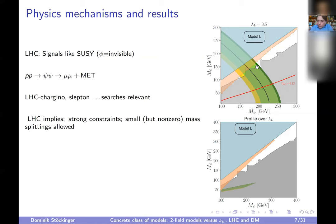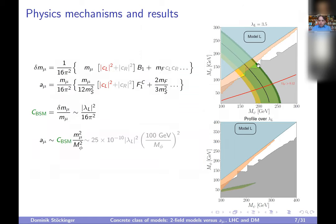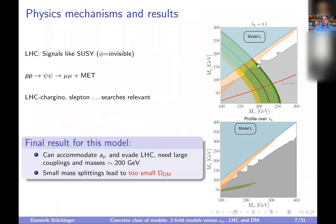The model can in principle explain dark matter and is in agreement with LHC data, but not in the same parameter space. To explain dark matter you need mass splittings of 100 GeV; to agree with LHC you need mass splittings of 50 GeV — you cannot satisfy both simultaneously. Regarding the staircase pattern in the gray area: this is a numerical artifact from scan density; in principle it should be a straight line.